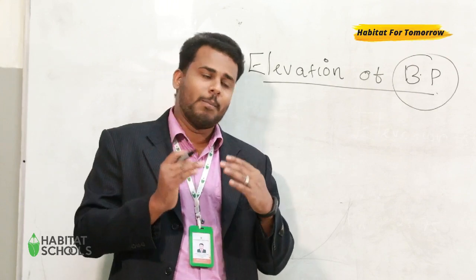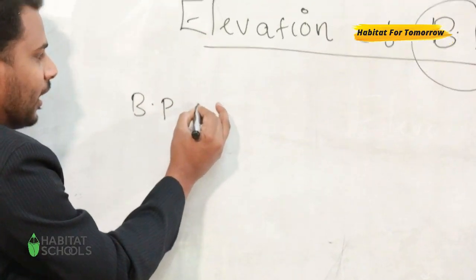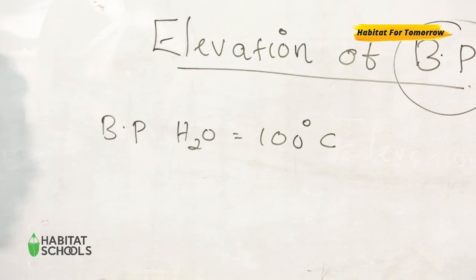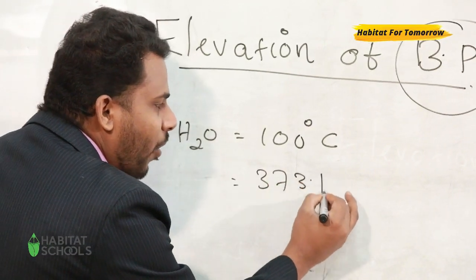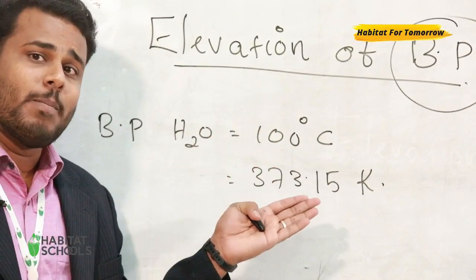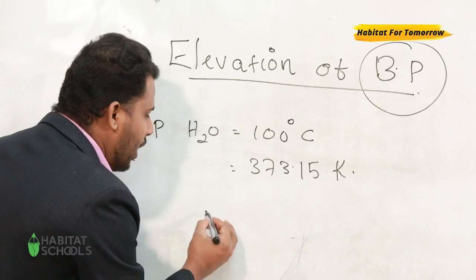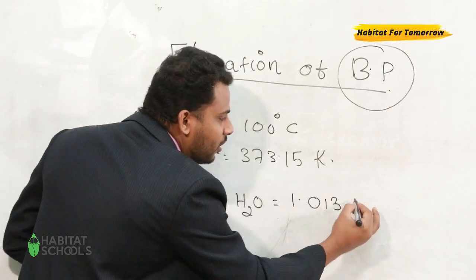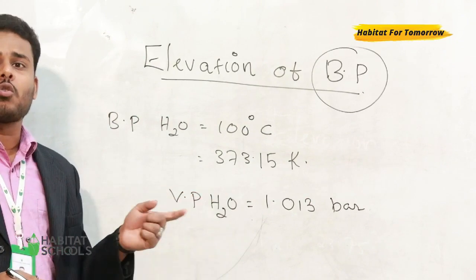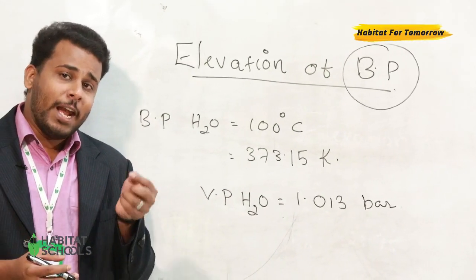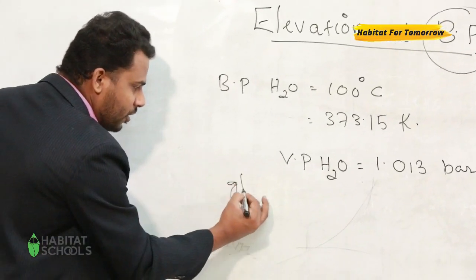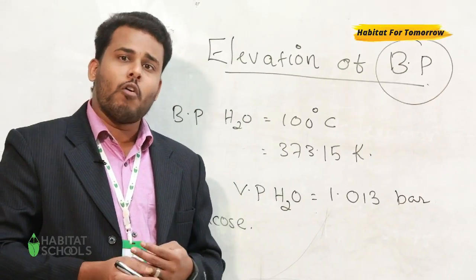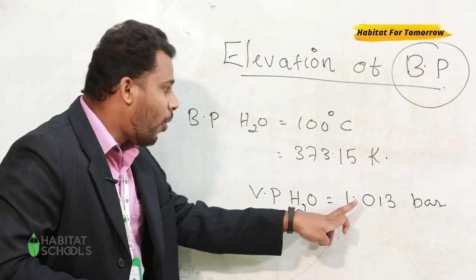For example, let us consider the boiling point of water, that is 100 degrees Celsius, which is equal to 373.15 Kelvin. At this temperature, the vapor pressure of water is equal to 1.013 bar, which is equal to one atmospheric pressure. When we add a non-volatile solute such as glucose, the vapor pressure lowers and becomes less than 1.013 bar.